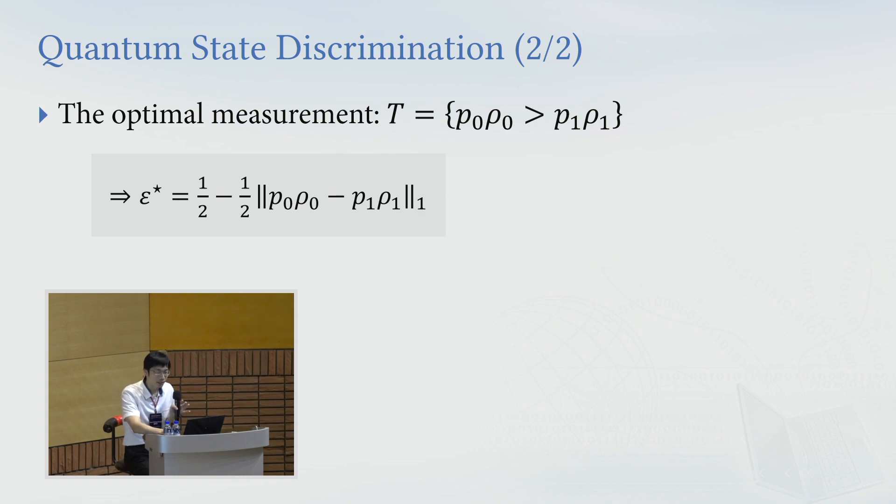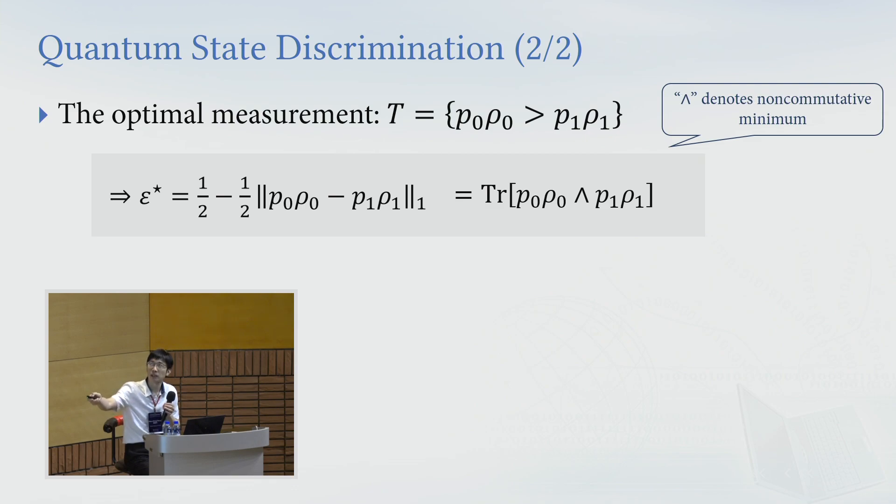And there's even a more compact form to express this error. I use this wedge as a non-commutative minimum. So if the state T0 rho zero commutes with T1 rho one, then this minimum means that we just take the point-wise minimum between the eigenvalues of these two operators, and then we take the sum of it. So that's the more compact form. I will talk about this shortly.